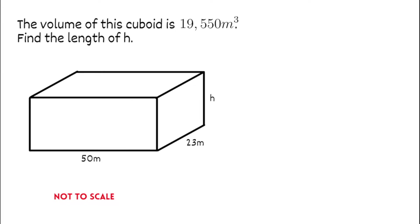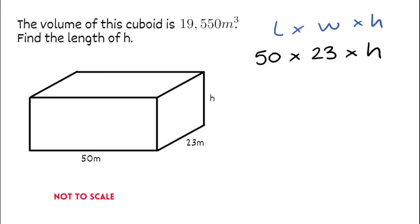This question is slightly different. This time we're told the volume of the cuboid is 19,550 metres cubed and we have to find the length of h — the height of the cuboid. We use our formula: the volume of a cuboid is length multiplied by width multiplied by height. The length is 50 and we multiply by the width which is 23, then multiply by h. Typing 50 times 23 into the calculator gives 1,150, so we have 1,150 multiplied by h equals the volume of the cuboid, which equals 19,550.